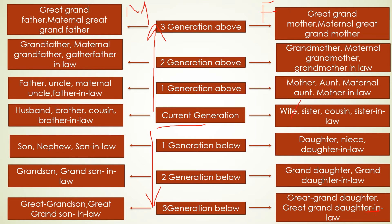In the current generation, the female side includes: wife, sister, cousin, and sister-in-law. The male side in the current generation includes: husband, brother, cousin, and brother-in-law.